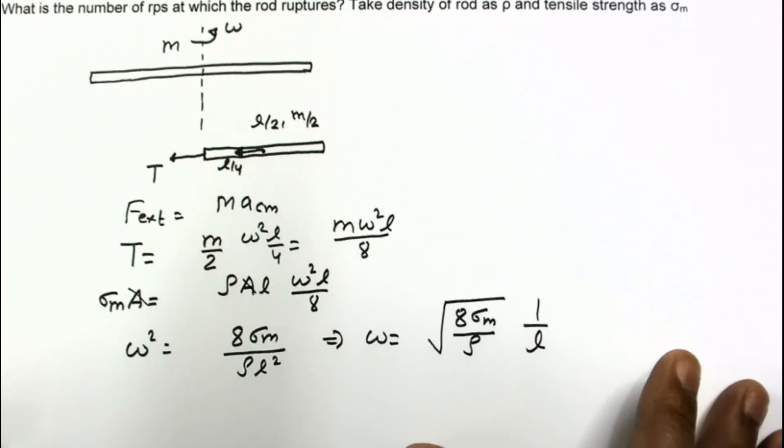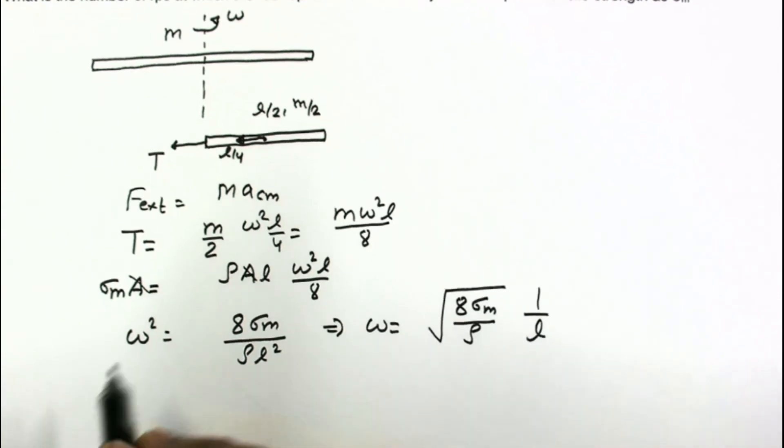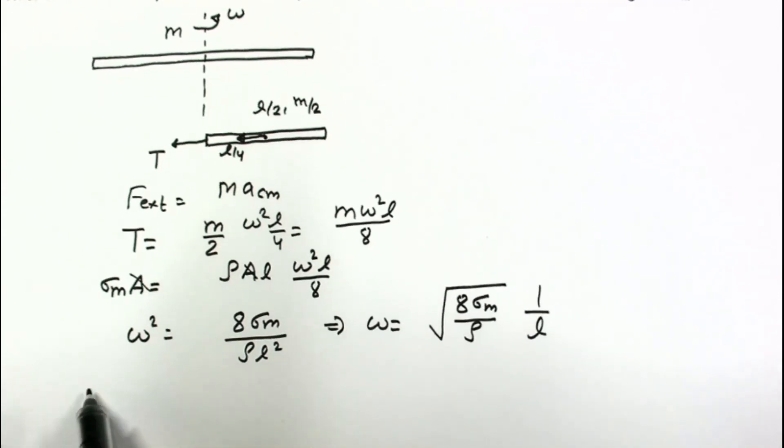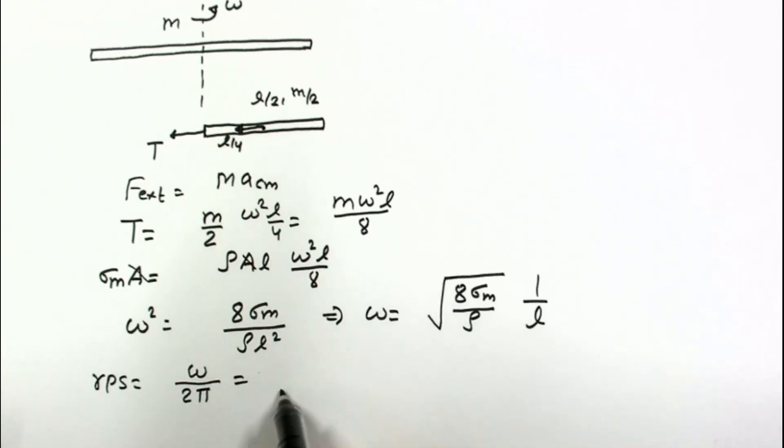We have to find the revolutions per second. For revolution, rps equals this ω divided by 2π to make it revolutions per second. Divide by 2π: √(8σ_m/(ρl)) divided by 2π.